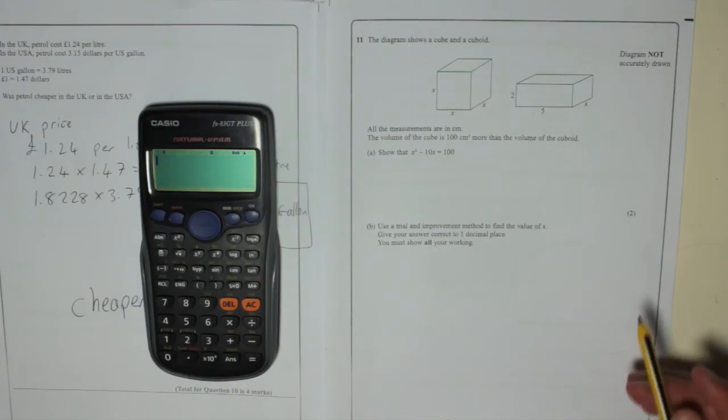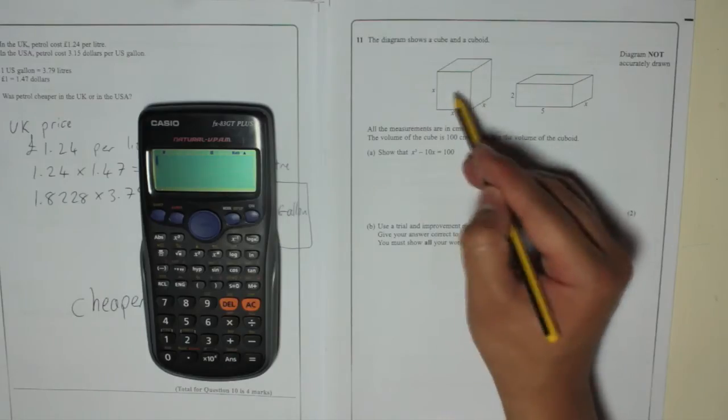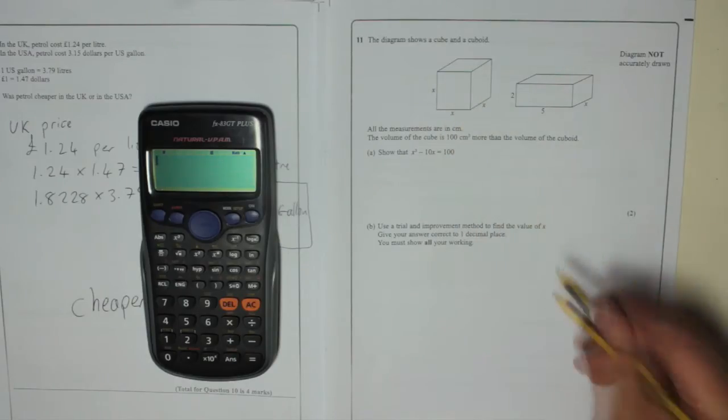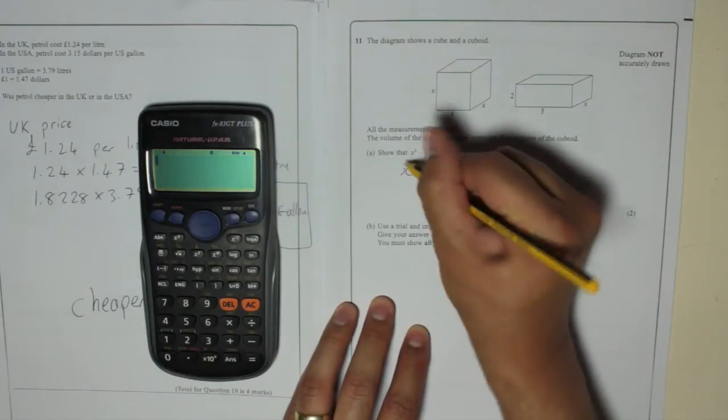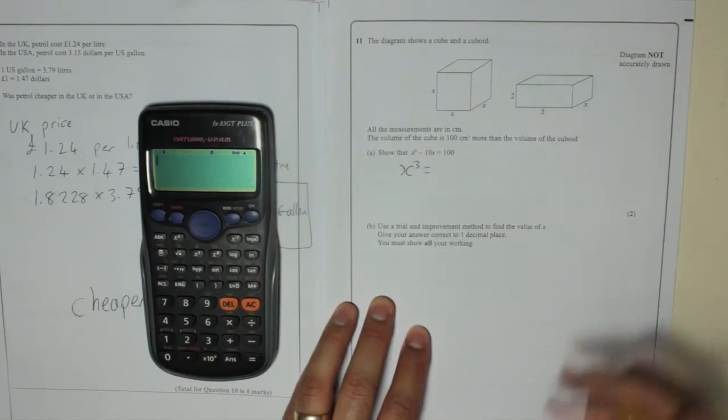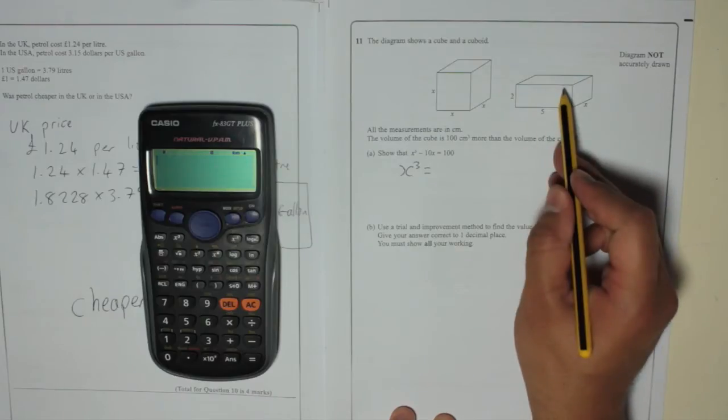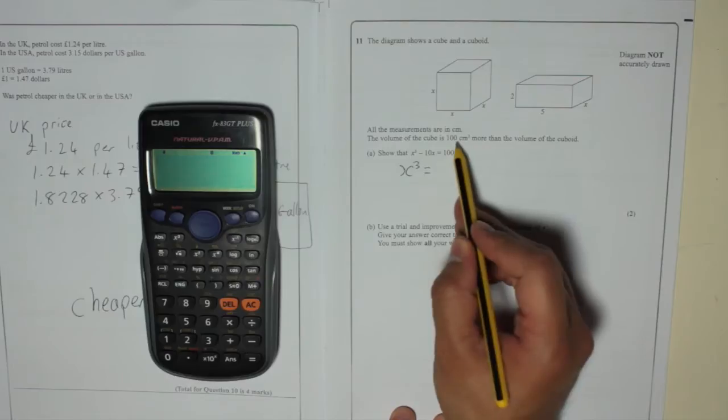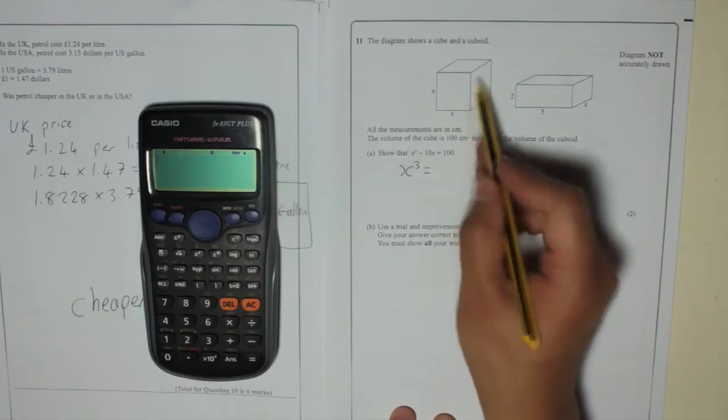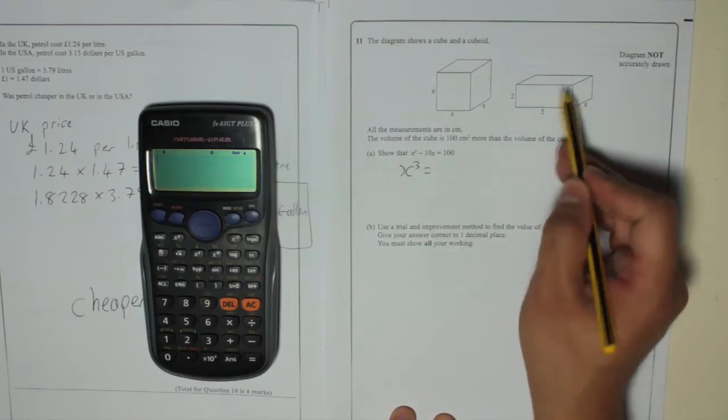So write down what you know. The volume of the cuboid is X times X times X, which is X cubed. Well, look, there's an X cubed in there. So X cubed, what's it equal to? It is equal to the volume of this plus 100 because the volume of the cube is 100 centimeters more. So that's bigger. So it's that plus 100 will give you that.